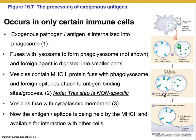Once the epitopes are loaded, and because this is a membrane vesicle, all it has to do is fuse with the cytoplasmic membrane — much like the process of exocytosis. Once those two membranes fuse, the MHC II molecules are now present on the outside of the cell and projected outward, available for interaction with other immune cells. This is the exogenous antigen pathway, starting with phagocytosis by a professional antigen presenting cell.